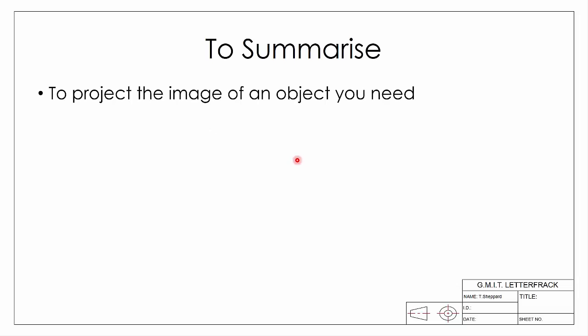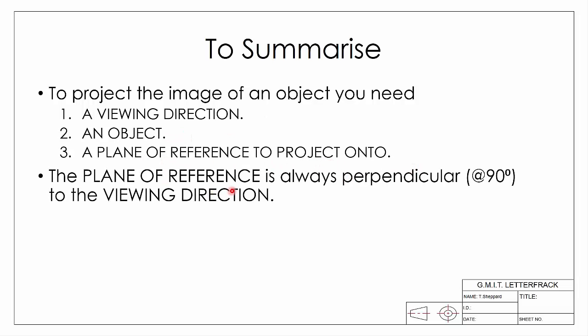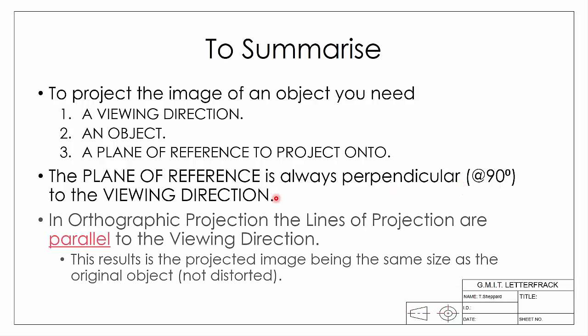To summarize: to project an image you need three components — a viewing direction, an object, and a plane of reference to project onto. The plane of reference is always perpendicular or at 90 degrees to the viewing direction. For orthographic projection, the lines of projection are parallel to the viewing direction, so the image ends up the same size as the original object. For perspective, they emit from a single point spreading outwards, which distorts the image. This is the first video in our series on orthographic projection — thank you very much.